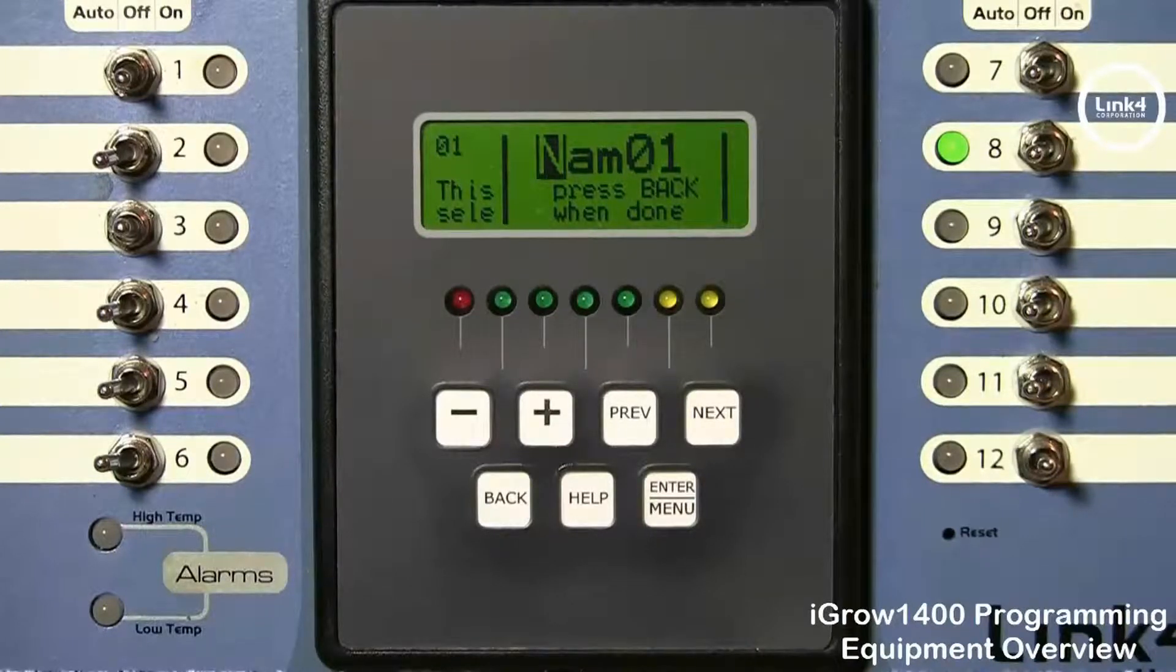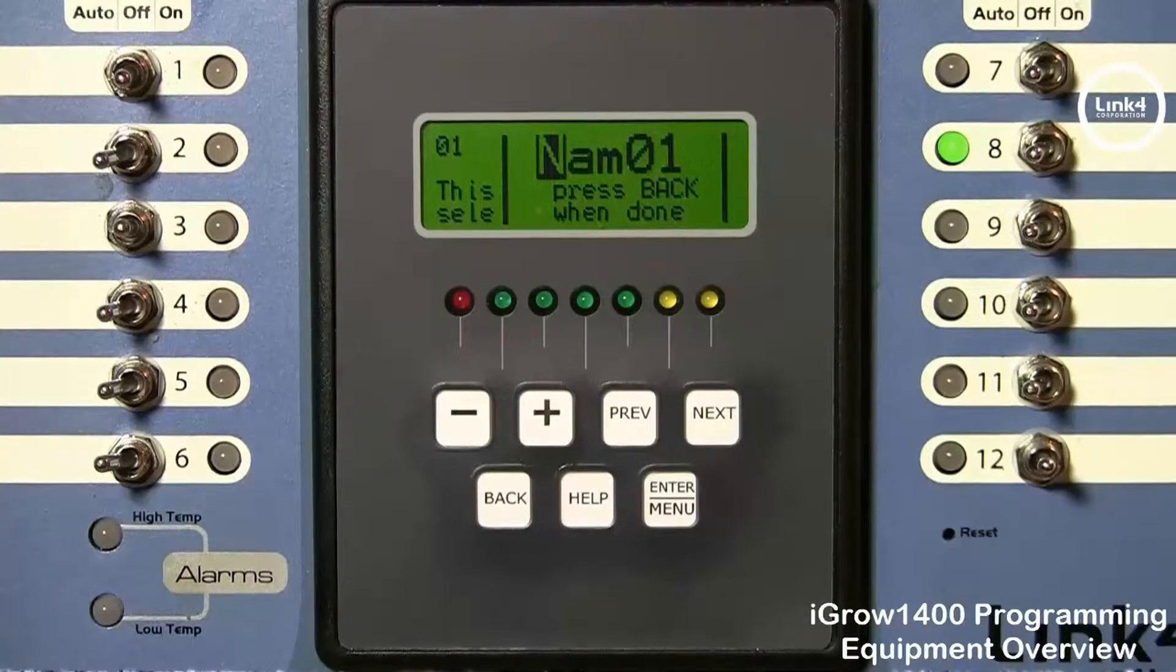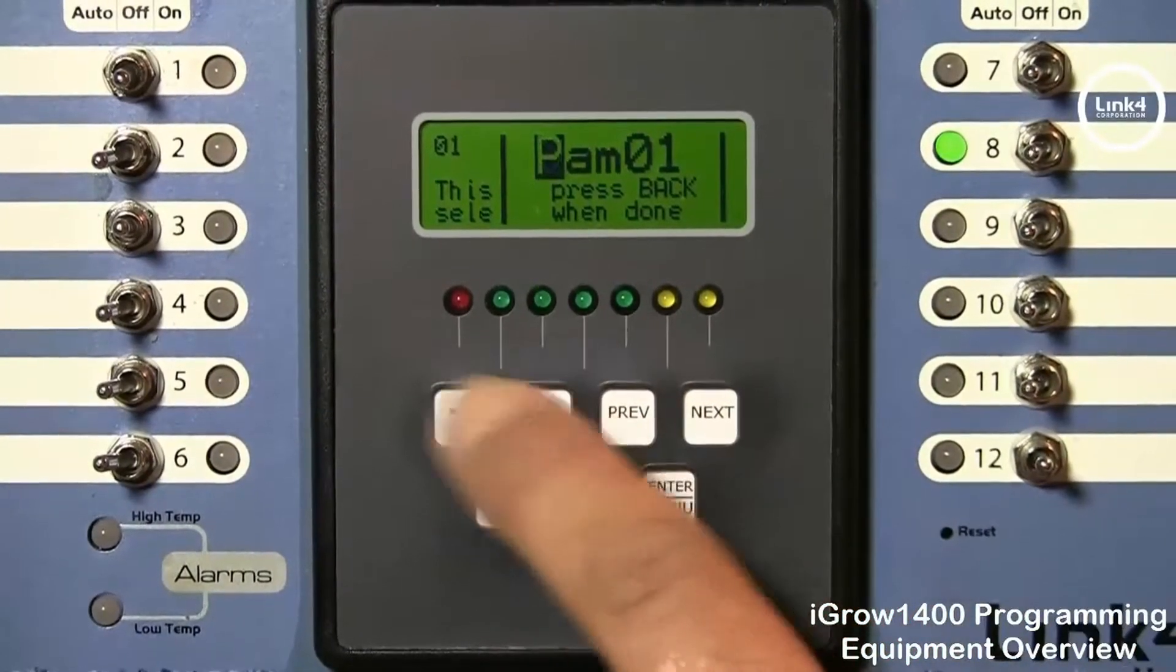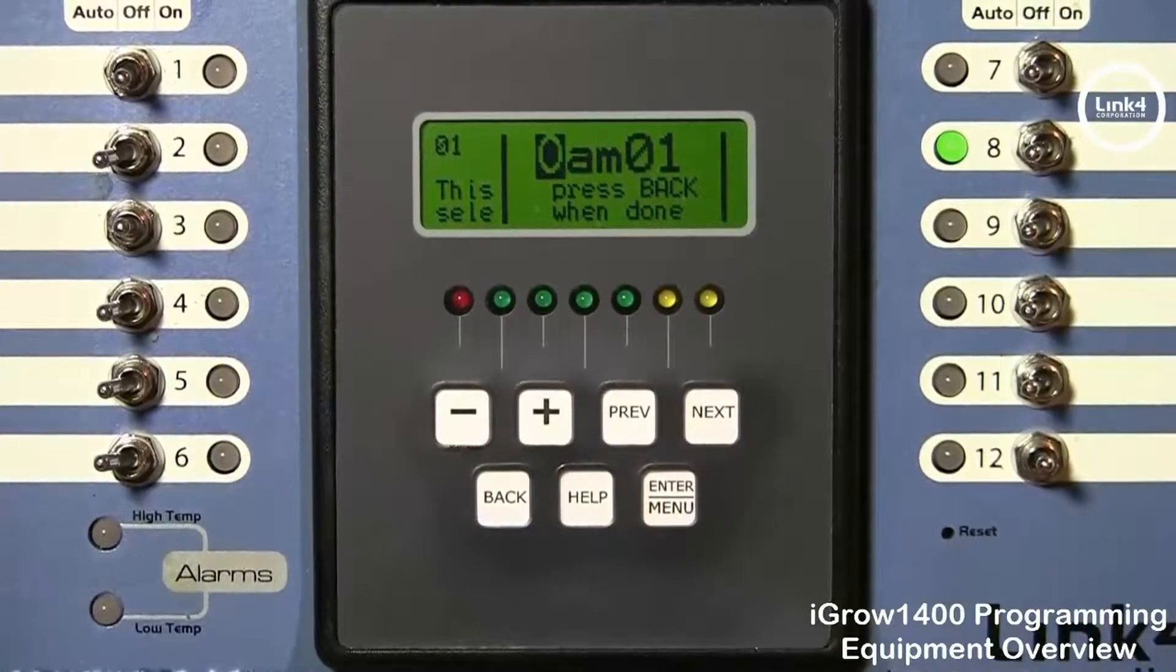Now the plus and minus buttons allow you to navigate between the name. Now in this screen you have up to five alphanumeric characters.